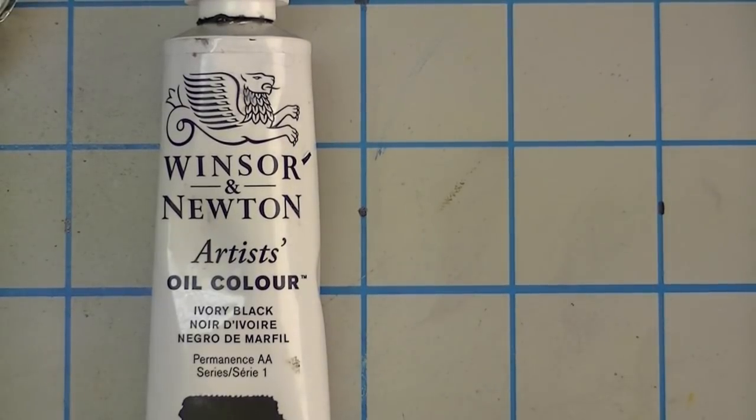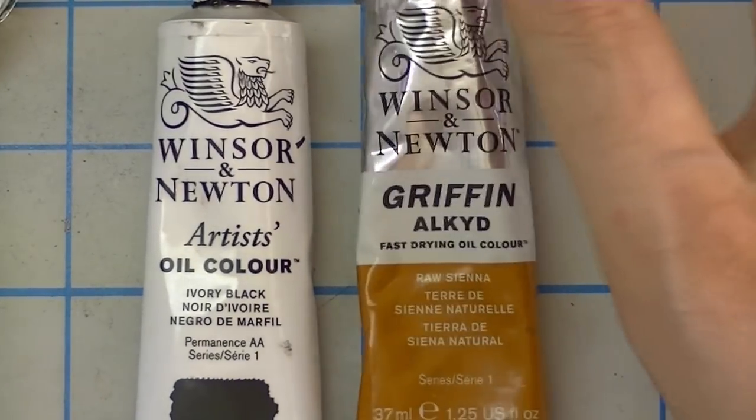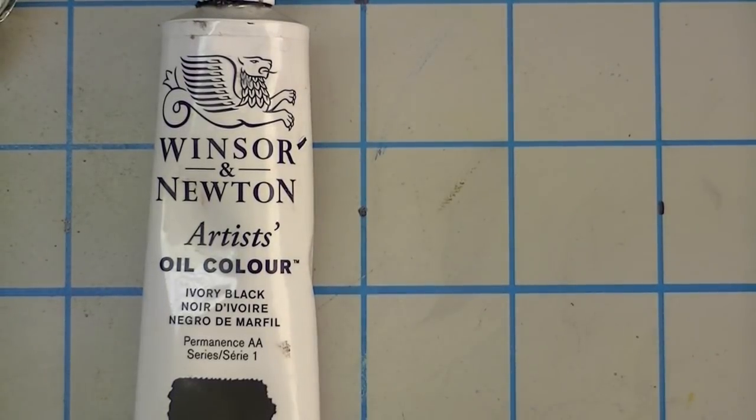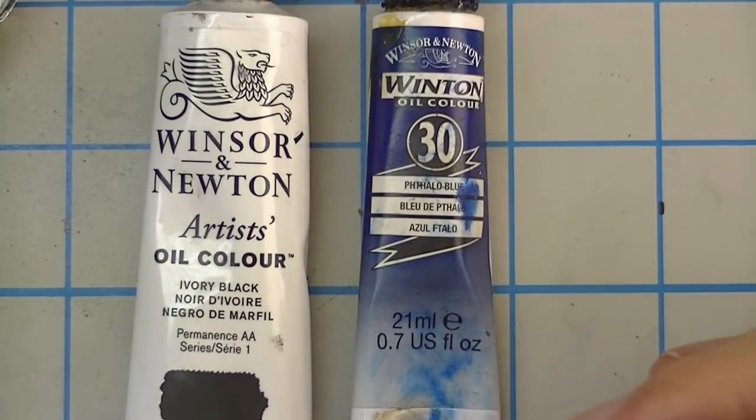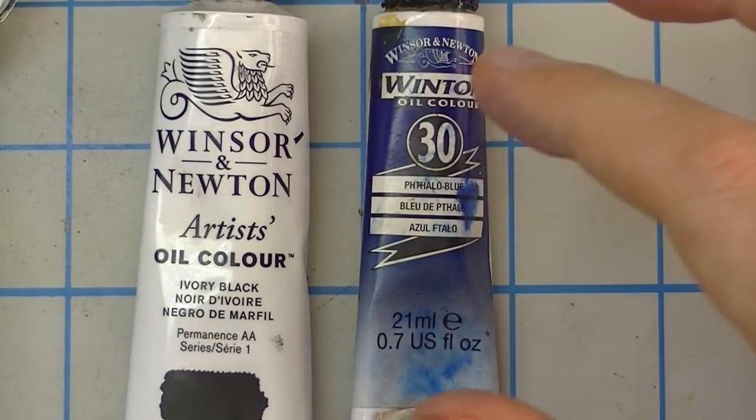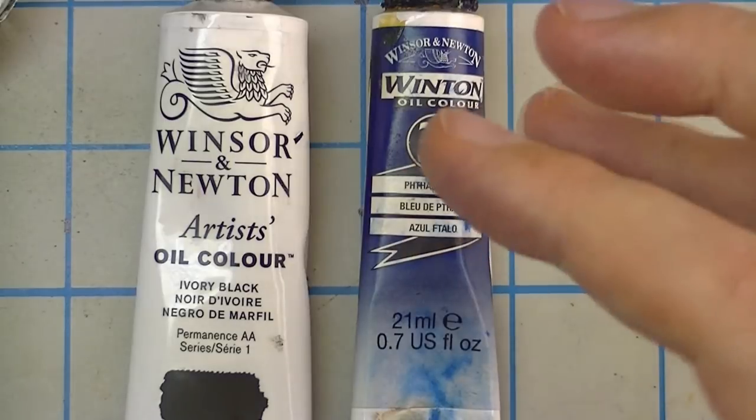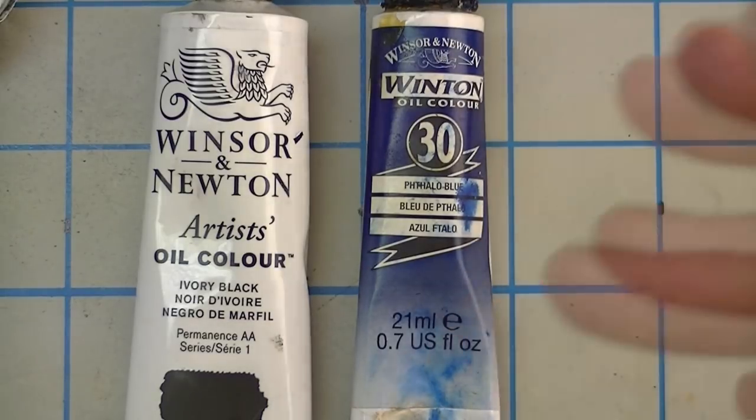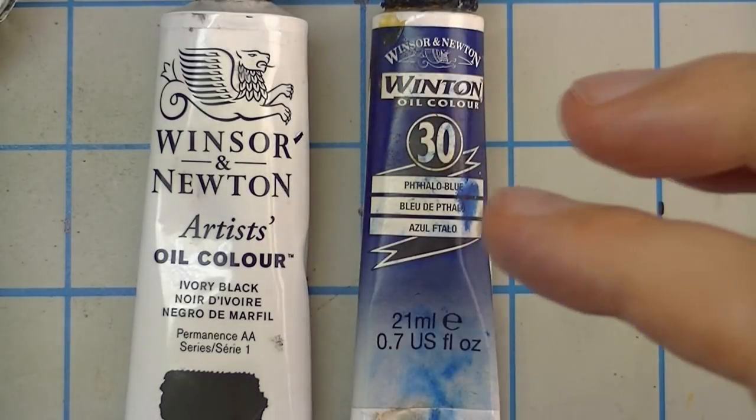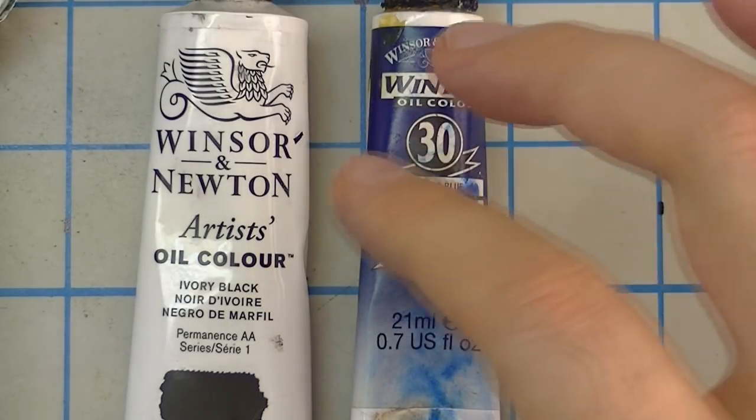This is Windsor Newton artist's oil color. You can get different versions like this Windsor Newton Griffin alkyd fast drying oil color, which is also pretty good. The difference between this and this, aside from price, is that the Winton, being considered a student grade, is cheaper because it has a lower pigment ratio.